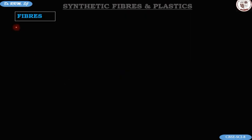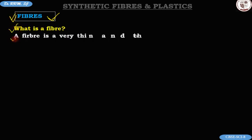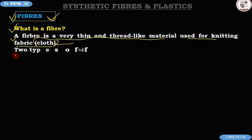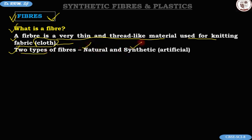Now let's begin with fibers. A fiber is a very thin and thread-like material which is used for knitting fabric — meaning cloth — from which you stitch clothes. There are two types of fibers. Applying the same concept, we have natural fibers and synthetic fibers. Synthetic fibers are also called artificial fibers.